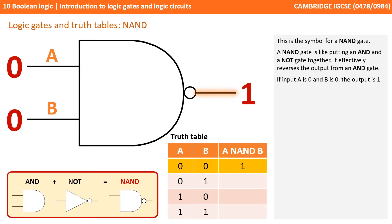This is the symbol for a NAND gate. A NAND gate is like putting an AND and a NOT gate together. It effectively reverses the output from an AND gate. So if input A is 0 and B is 0, the output is 1.